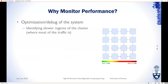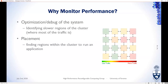One of the biggest use cases is optimization and debugging. In a simple network model where traffic on links is visualized by color — red for busy, green for light — a performance monitor helps answer where the slow regions are. We can use that to debug and optimize the system. Looking at how busy each node is leads to the placement problem: finding nodes in a cluster that best suit running a new task. Performance monitoring helps identify regions best suited for a new application.